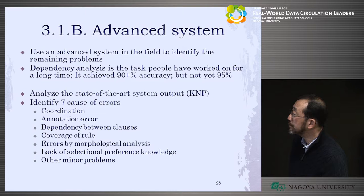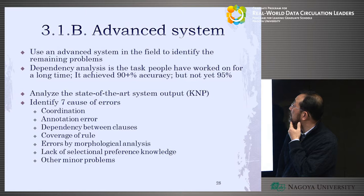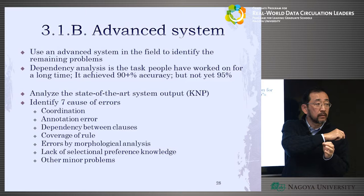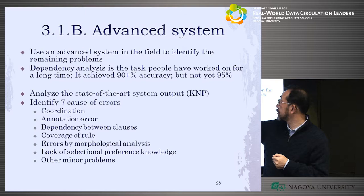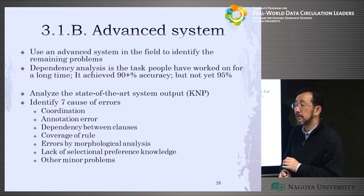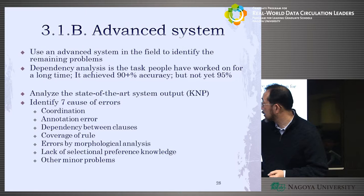An advanced system example is dependency analysis. In Japanese, it's expressed by dependency of syntax. Right now it achieves over 90% accuracy, but not yet 95%, so there are still seven or eight percent errors. They want to tackle this remaining percentage and they found coordination errors — 'A and B' kinds of things.